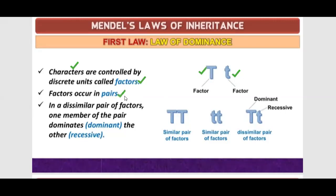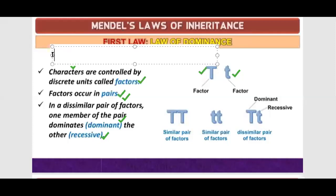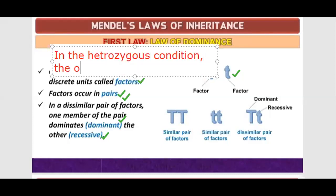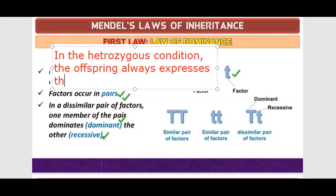In a dissimilar pair of factors, one member is dominant and another member is recessive. If there are two factors — tall and dwarf — tall has a dominant character and dwarf has a recessive character. The Law of Dominance states that in the heterozygous condition, the offspring always expresses the dominant character.